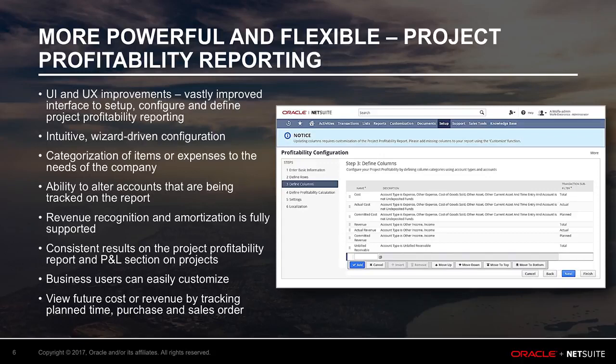It includes a more elegant interface to set up account types and item categories and enables you to define total cost, total revenue, and total profit. Specifically, you can control and set up account types on the x-axis and item categories on the y-axis.